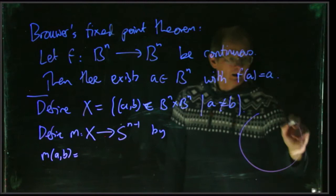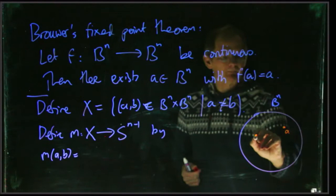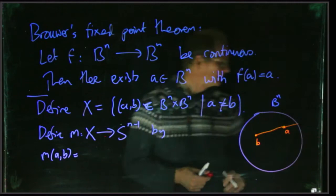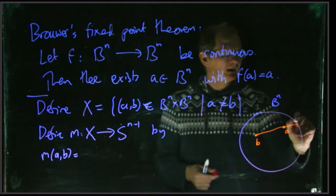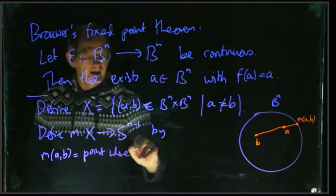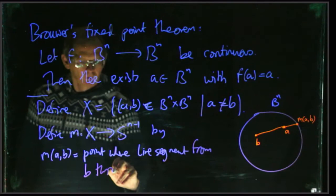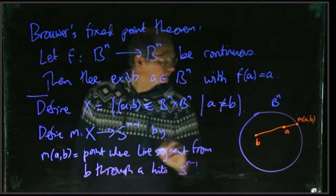Well we'll draw the picture first. So here's our B^n, it's the case n equals 2 of course, and then maybe we've got a point a here and a point b here. What we can do is we draw a line starting from b, passing through a, and going out until it hits the boundary, and we define this to be m(a,b). So in words, this is the point where the line segment from b through a hits S^(n-1).